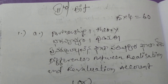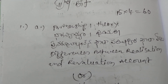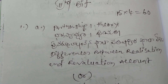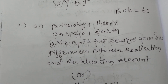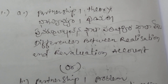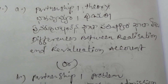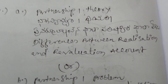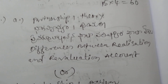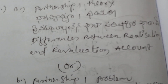So the first point is Partnership 1. Partnership 1 theory — various forms of theory. One problem and one theory proforma will be given. Reconstruction, realization, revaluation accounts. The difference between realization and revaluation account is an important topic.